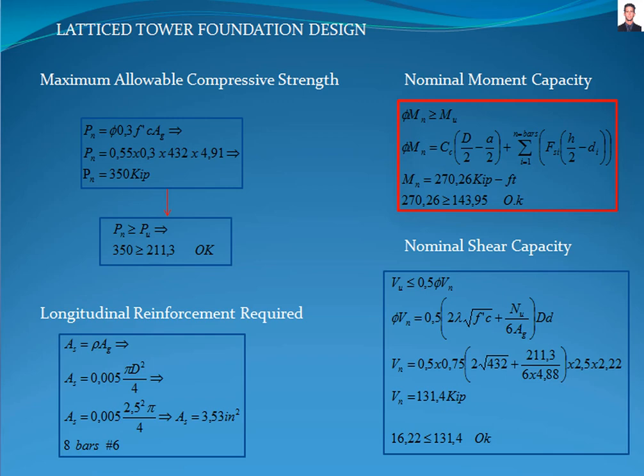The next step is to calculate the nominal moment capacity of the pile through the stress-strain diagram. Normally the least capacity occurs in the tension phase. Solving this equation, the nominal moment capacity is 270.26 kilopound-feet, which is greater than the factored bending moment acting in the pile.